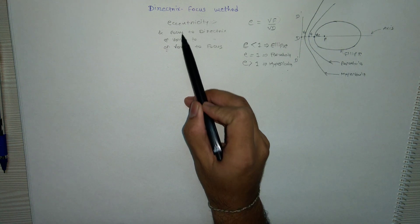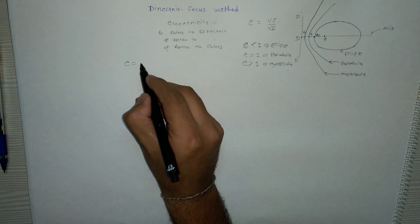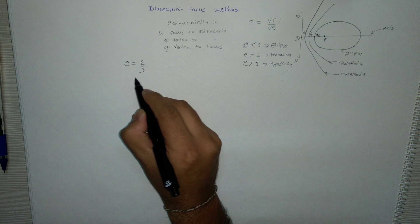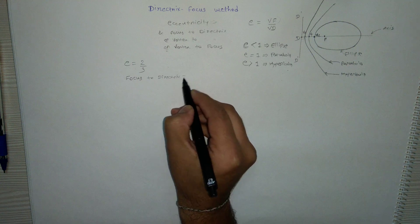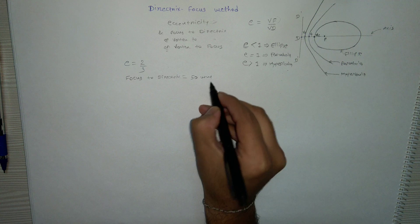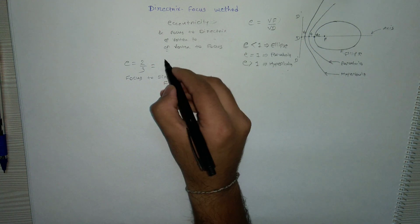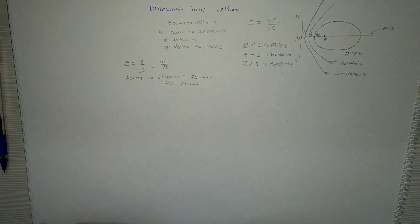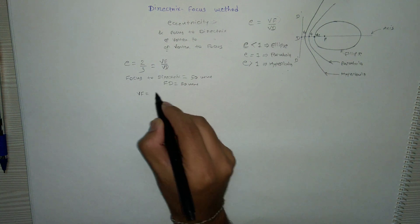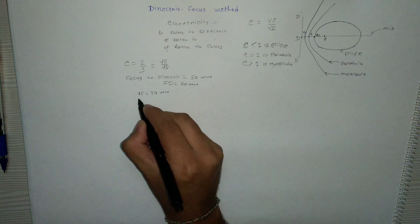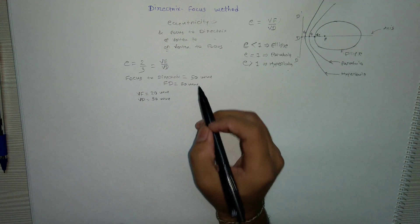For the present example, eccentricity E = 2/3 and the distance from focus to directrix is 50 mm. Using the relationship Vf/Vd = 2/3 and Vf + Vd = 50 mm, we calculate Vf = 20 mm and Vd = 30 mm.